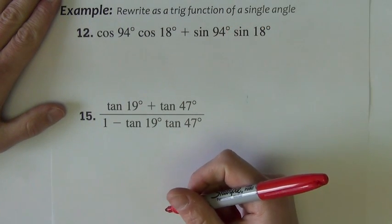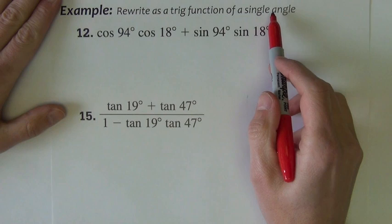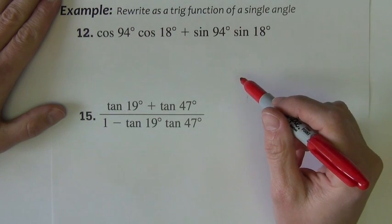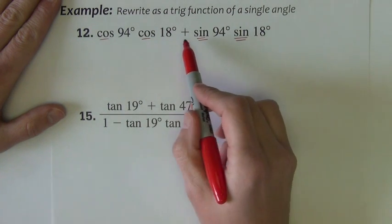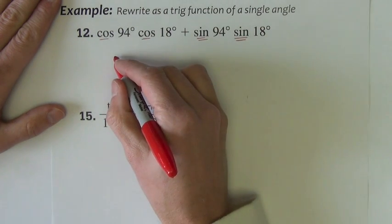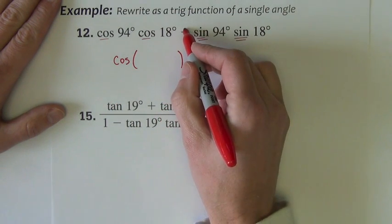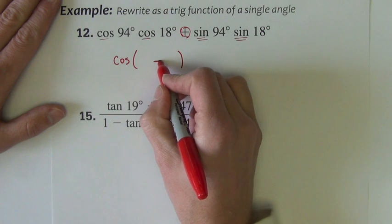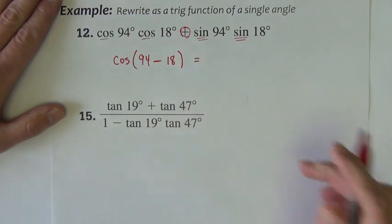Next couple examples. The directions asks us to rewrite as a trig function of a single angle. This is an example of using the sum and difference formulas in reverse. So kind of recognizing which one is at play here. I see cosine cosine sine sine. The expansion formula where the functions are the same in each term is the cosine one. So doing it in reverse. And also notice that the cosine one uses the opposite sign of what's in the middle here. So we're going to be subtracting.